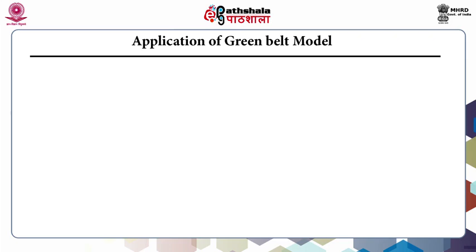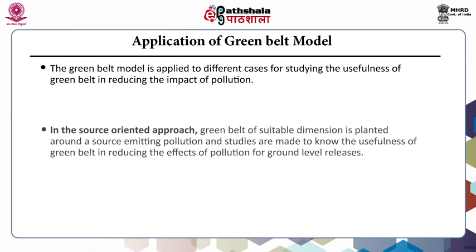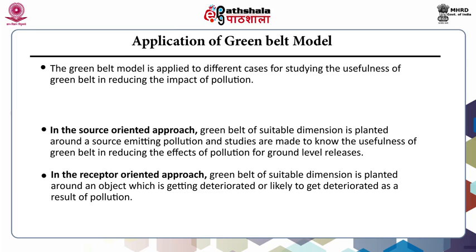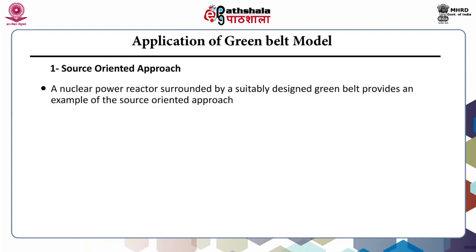Coming to the application part of the green belt model, it is applied to different cases for studying the usefulness of green belt in reducing the impact of pollution. In the source-oriented approach, a green belt of suitable dimensions is planted around a source emitting pollution. A nuclear power reactor surrounded by a suitably designed green belt is the best example of the source-oriented approach.